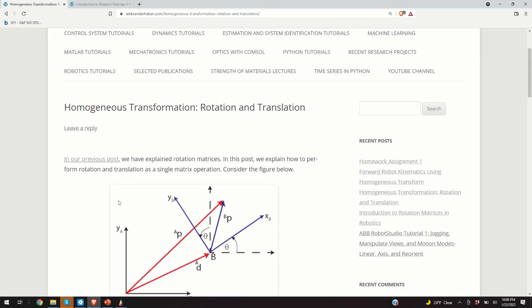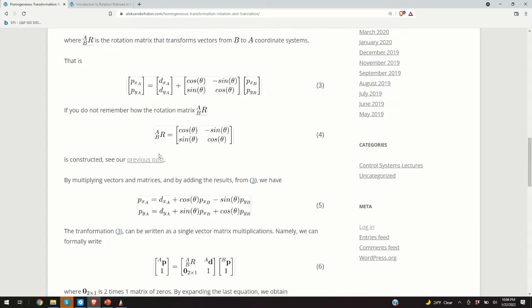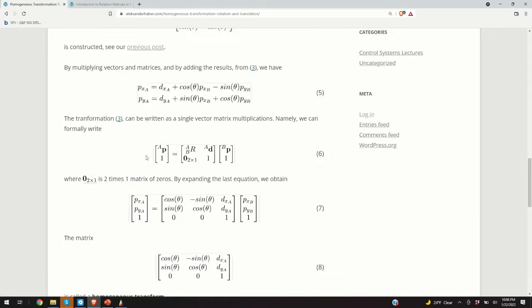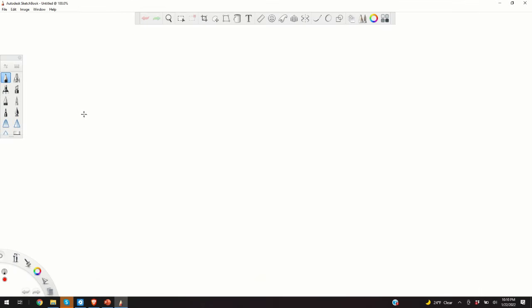Hello everyone, in this video we will explain homogeneous transformations. That is, we will explain how to perform rotation and translation from one coordinate system to another by performing a single vector matrix multiplication. And as always, I created a post that nicely summarizes everything that I will explain in this video. A link to this post is given in the description below. Okay, so let's start.